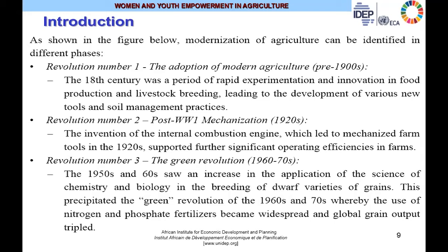Modernization of agriculture can be identified in four phases. During the 18th century, it was a period of rapid experimentation and innovation in food production and livestock breeding, leading to new tools and soil management practices. The second agricultural revolution, just after the First World War, was mechanization in the 1920s, following the invention of the internal combustion engine, which led to the manufacture of tractors and other farm tools. This helped increase farm efficiencies and reduced the workload, especially on labor.